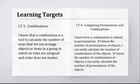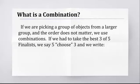So what is a combination? If we're picking a group of objects from a larger group and the order does not matter, we use combinations. If we had to take the best three of five finalists, we say five choose three, and we write 5C3, not surprising because for permutations it's 5P3. But we also have a notation that I tend to use a lot. I'll probably use it less just because with PowerPoint, it's easier to write 5C3. And I just notice that students prefer that. But the notation that you could see a lot is five choose three. It's like a five over a three in brackets. This can be a little bit confusing because it kind of looks like a fraction, but it's not a fraction at all. There's no line between them.